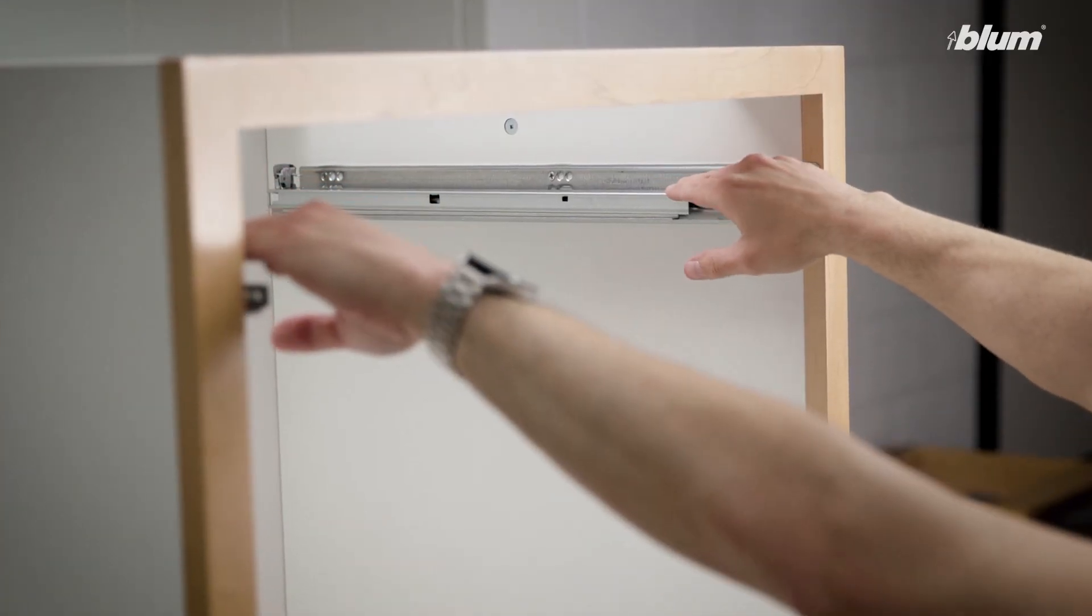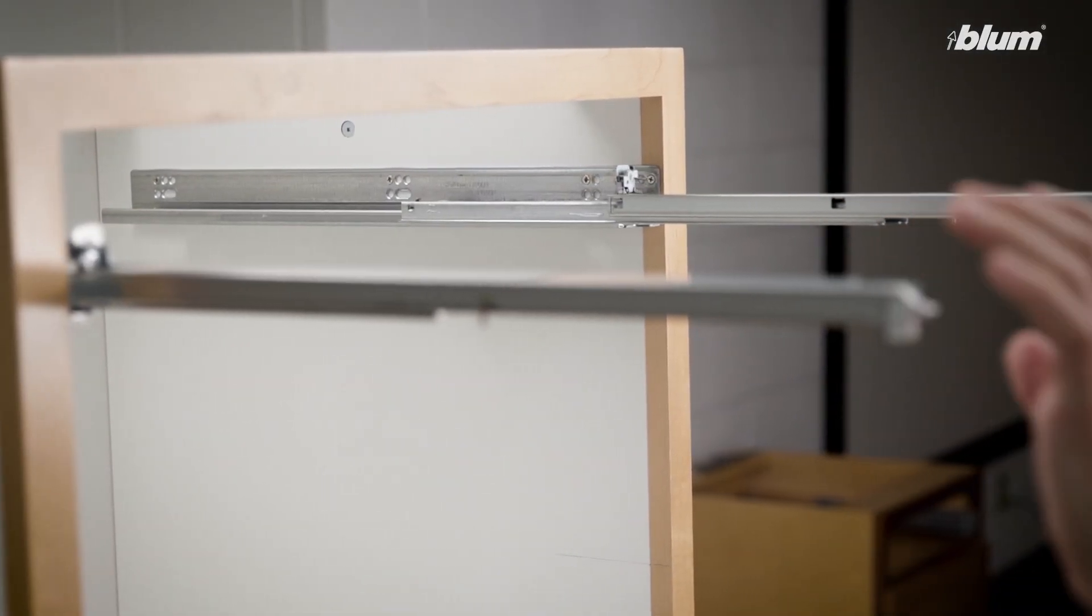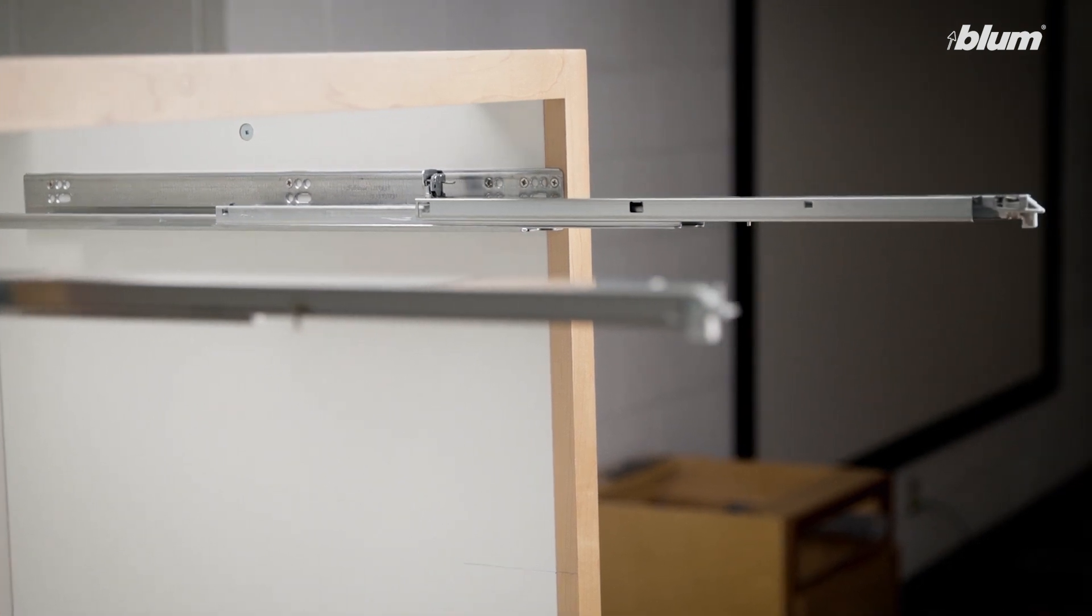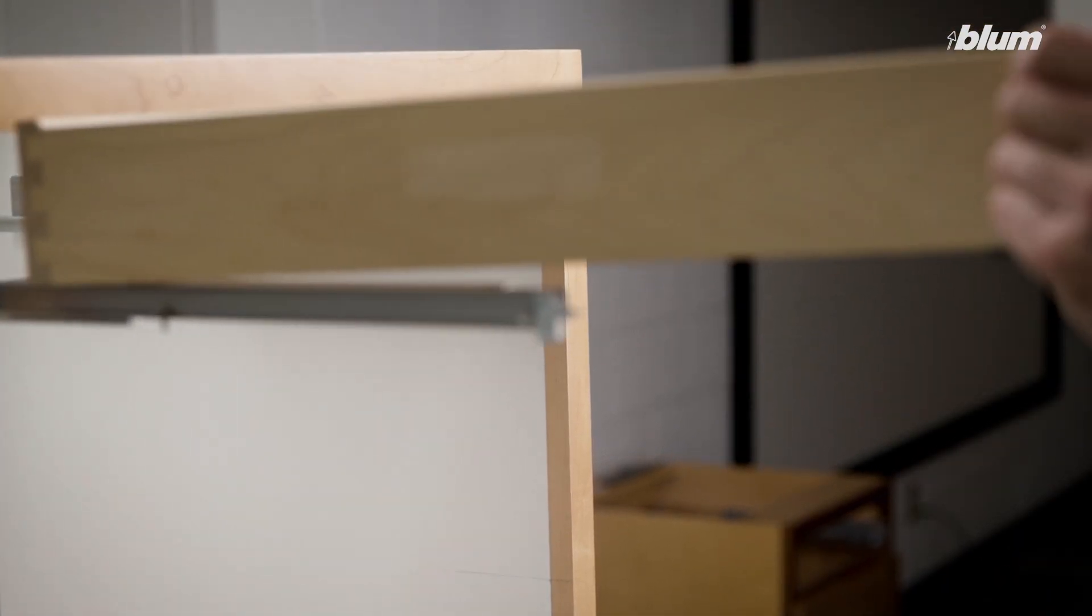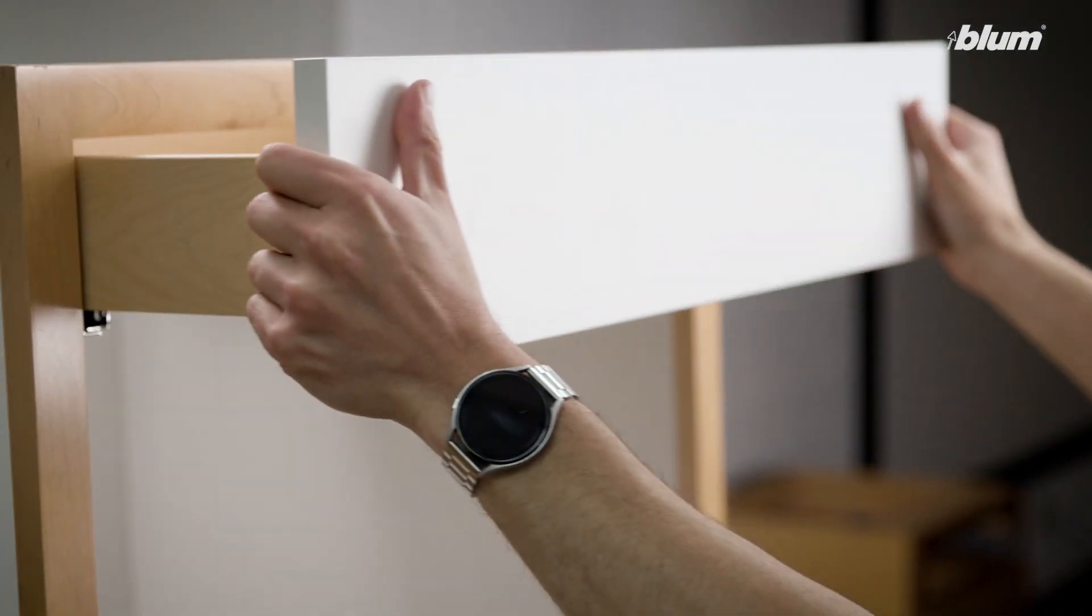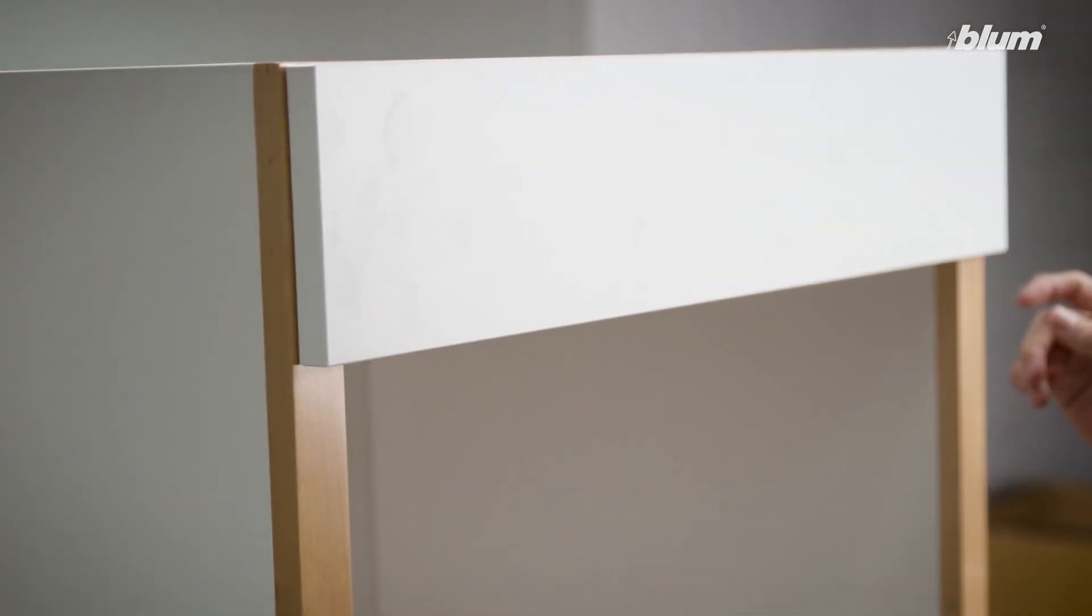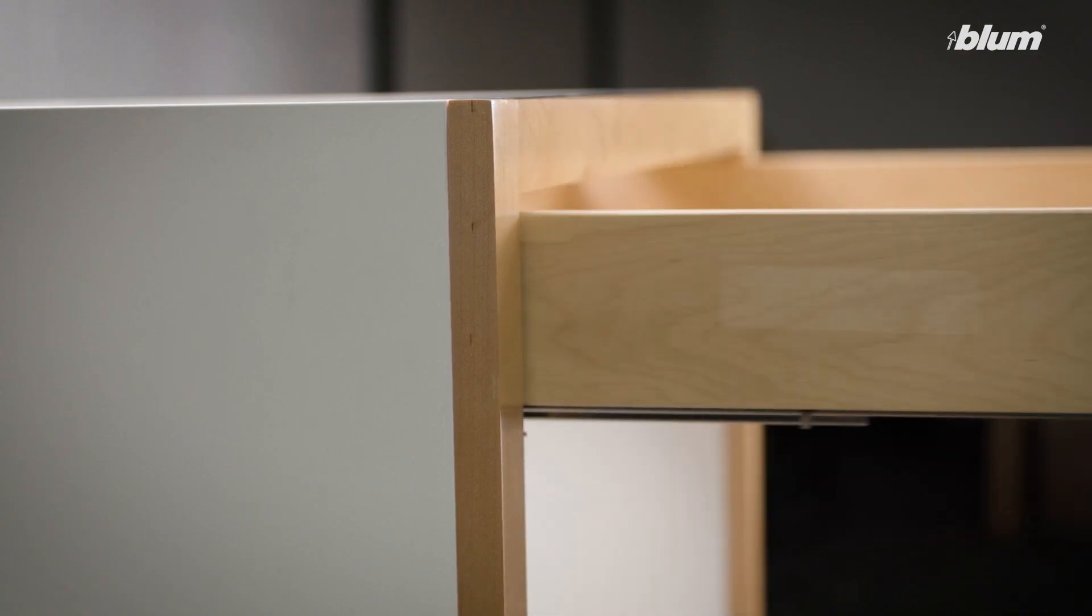Once the runners are installed, we can insert our drawer. Simply extend the runners, place the drawer on top of the runners and close. You'll hear an audible click when the locking devices engage the runners.